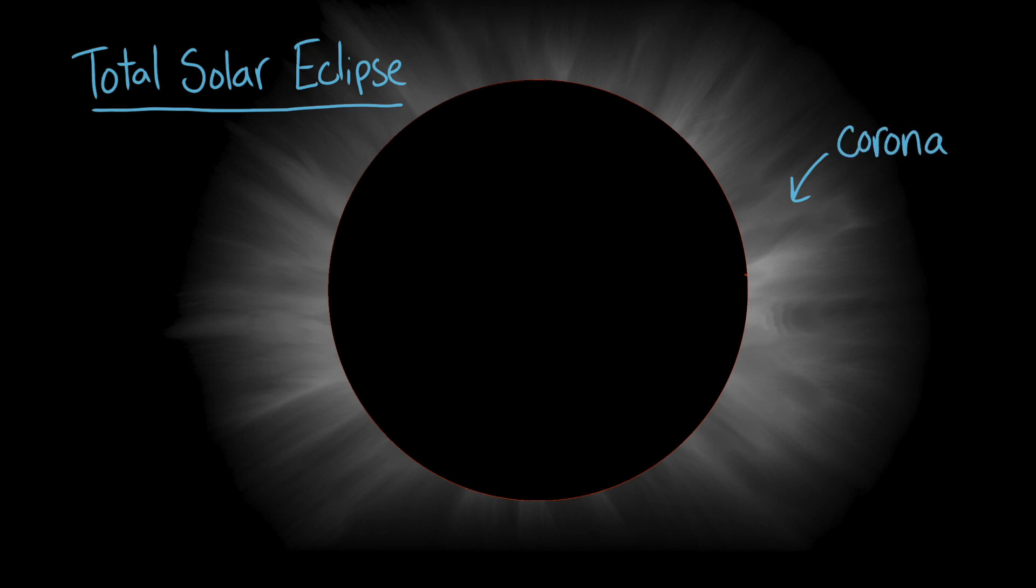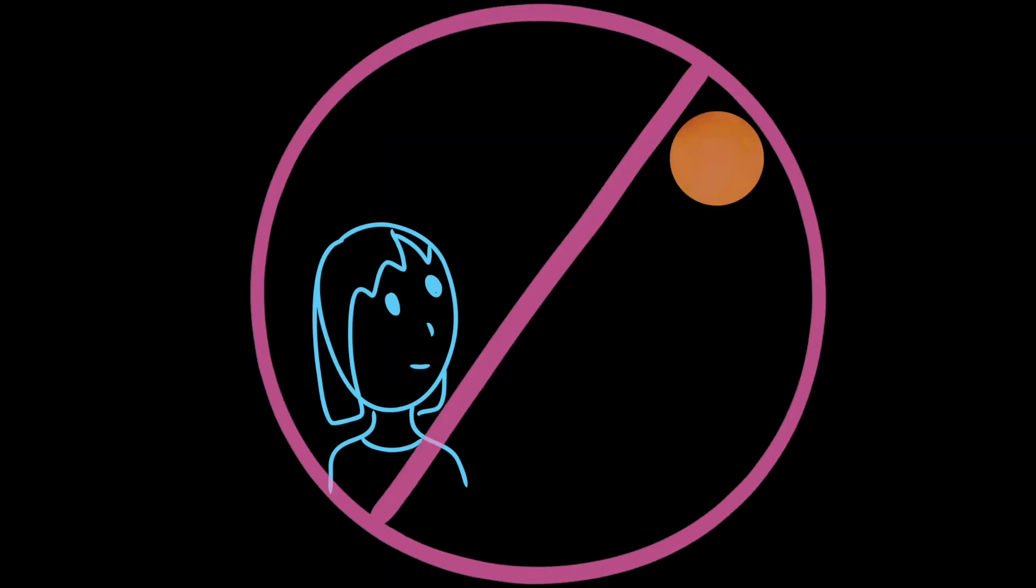On a non-solar eclipse day, the corona is invisible to us because we can't see past the bright light from the sun's surface. Remember to never stare or look at the sun with your naked eye, binoculars, or a telescope.